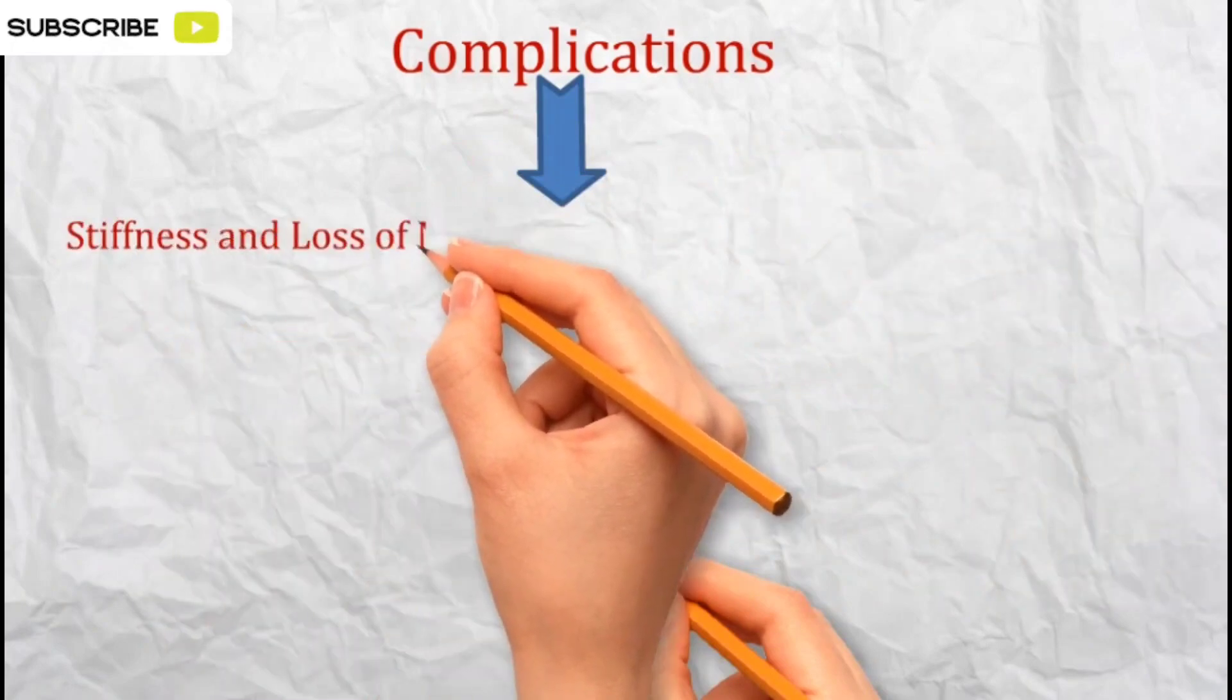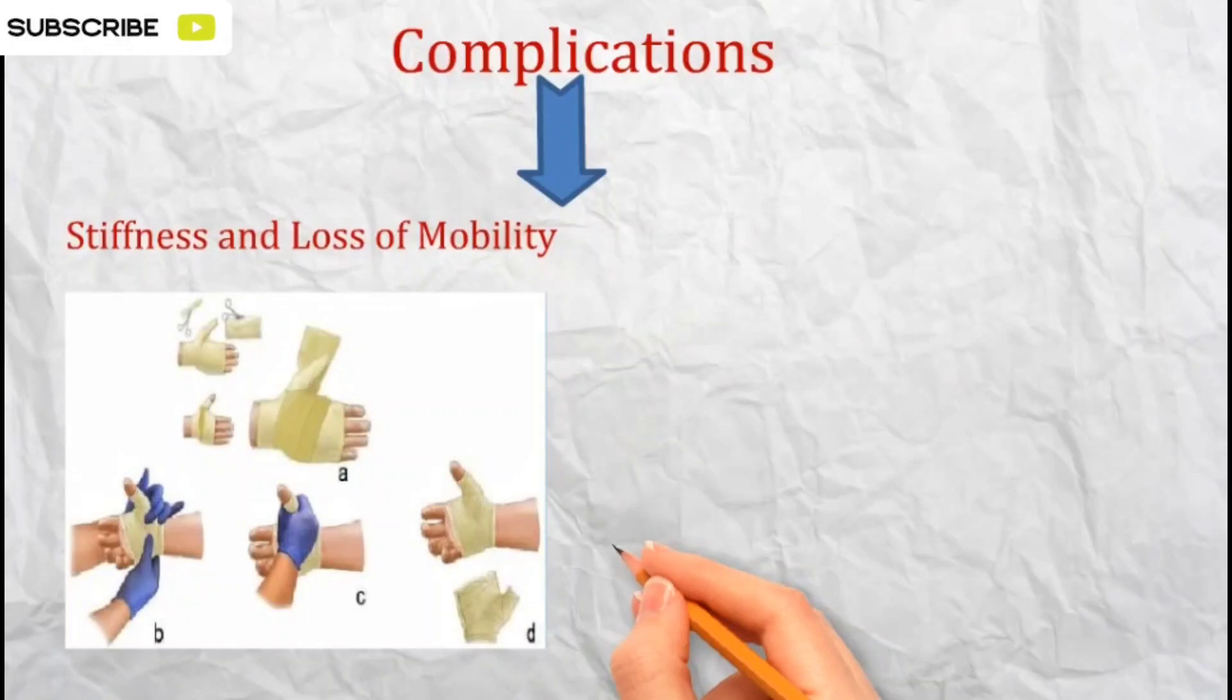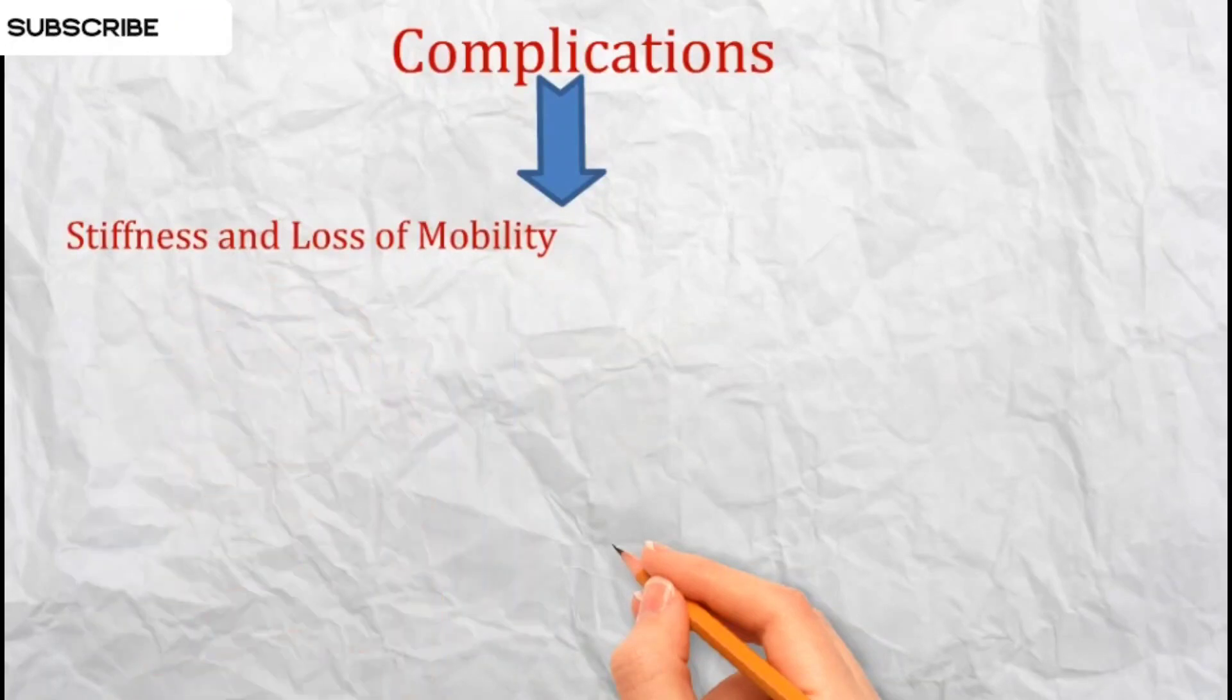Stiffness and loss of mobility: prolonged immobilization can lead to stiffness and loss of mobility in the carpometacarpal joint of the thumb.